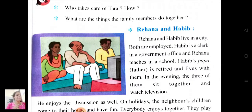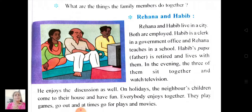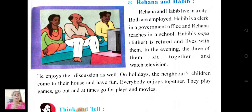Rehana and Habib live in a city. Both are employed — that means both are working. Habib is a clerk in a government office and Rehana teaches in school. Habib's papa is retired and lives with them. In the evening, the three of them sit together and watch television. On holidays, the neighbors' children come to their house and have fun. Everybody enjoys together. They play games, go out and at times go for plays and movies.